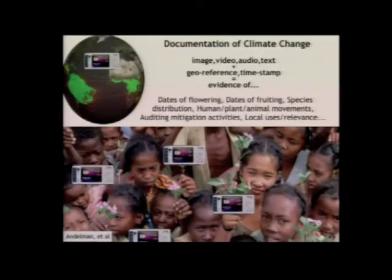Staying with ecosystems for the moment, mobile phones extend that vision of leveraging distributed imaging, this time in the form of geo-coded, coordinated image capture from everyday citizens. If you think about that satellite image again,